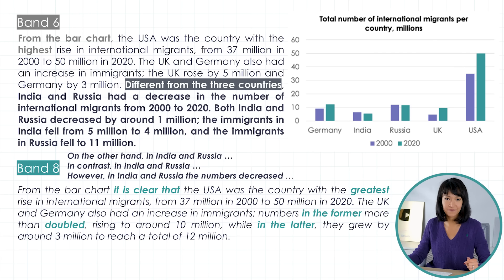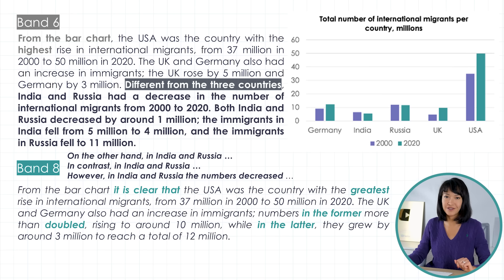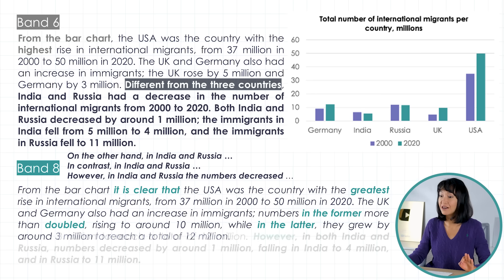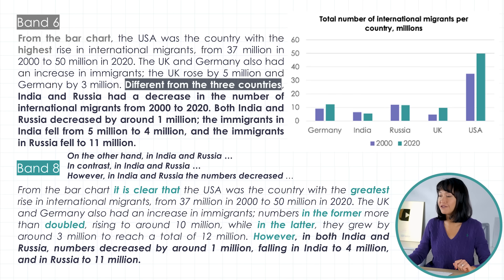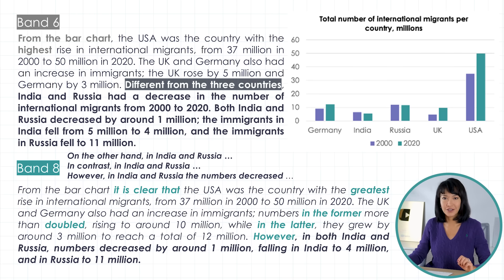The details on India and Russia are quite repetitive too — I've counted three Indias and three Russias in just two sentences. Here is a much shorter version: 'However, in both India and Russia, numbers decreased by around 1 million, falling in India to 4 million and in Russia to 11 million.' The examiner is always looking out for ways you can join your ideas together.